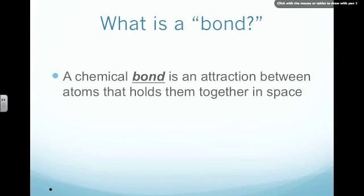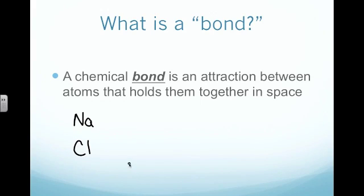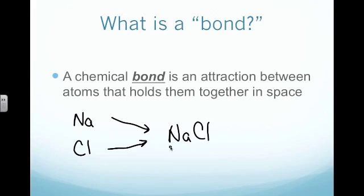We have seen the difference between elements and compounds before. For example, sodium is an element — it sits by itself. Chlorine is an element — it sits by itself. But when I combine those two things to form a compound, NaCl is formed. This is a compound, and what holds them together is this chemical bond. It's an attraction that holds the atoms together in space.